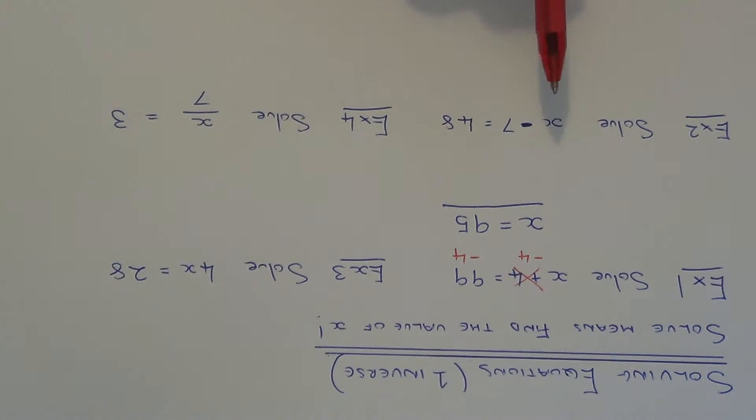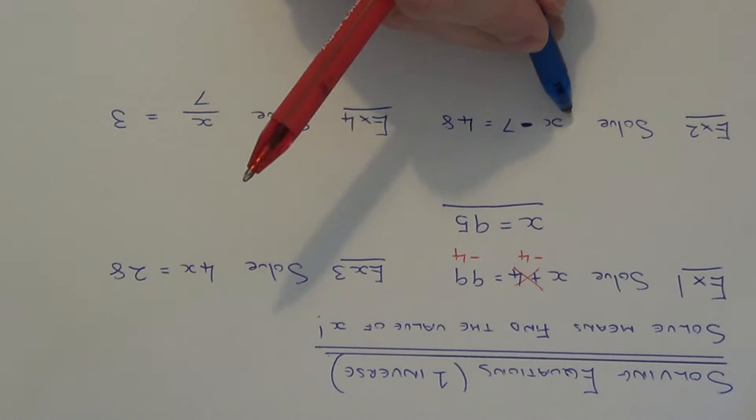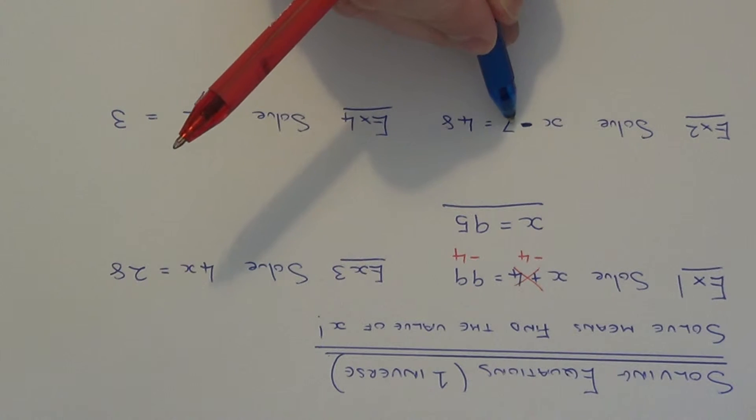Let's take a look at example 2. So in this one we have x minus 7 equals 48. So look on your left hand side, what are we doing to x? We are taking away 7.